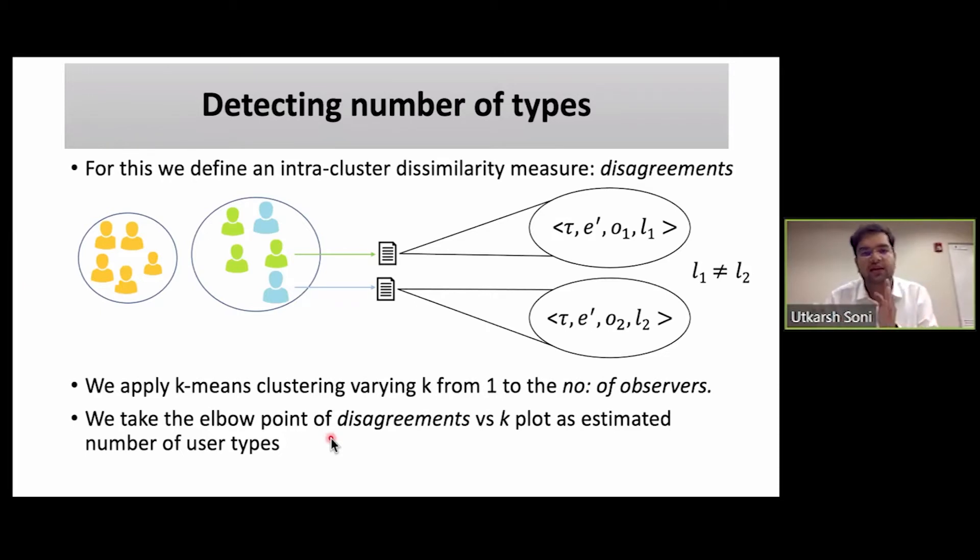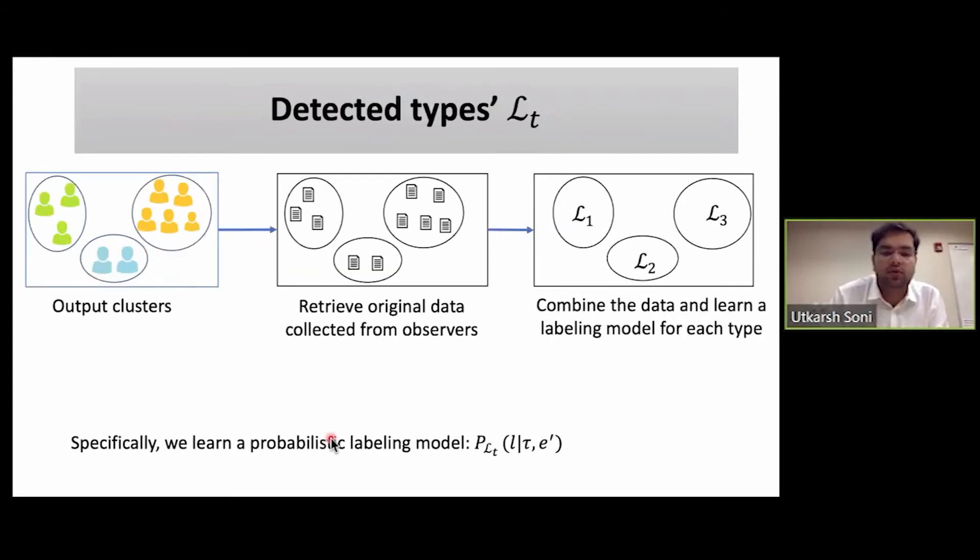So we take the clustering output corresponding to the elbow point. Then we retrieve the original data corresponding to the observers and combine the data at each cluster. That is used to learn the labeling model of all the types. So these were the three types that were identified, and these are the learned labeling model of the type. To be more specific, we actually learn a probabilistic version of this labeling model that gives us the probability of a label, meaning whether a transition is explicable or not, given a transition τ and a set of messages e'.